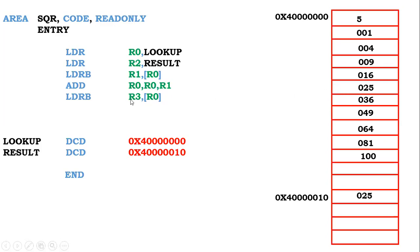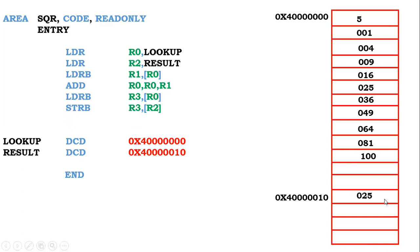That memory location gives us the square of 5, which is 25. So 25 comes into R3 — the job is done. Now we only need to transfer this result to the result memory location. R2 already holds the starting address of the result. So we store the byte content of R3 into the memory location pointed to by R2, placing 25 there.